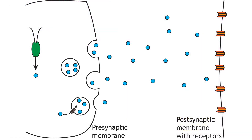A few criteria must be met for a molecule to be called a neurotransmitter. First, the transmitter must be synthesized within the presynaptic neuron. Second, the transmitter must be released by the presynaptic neuron in response to stimulation.